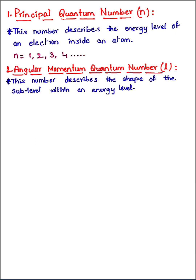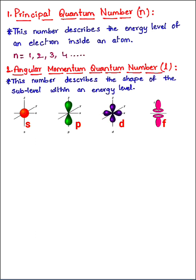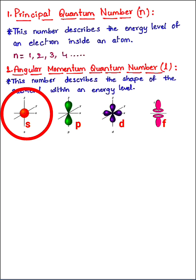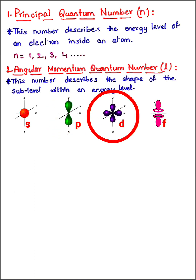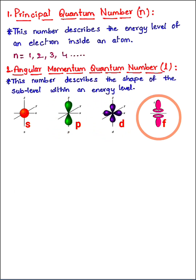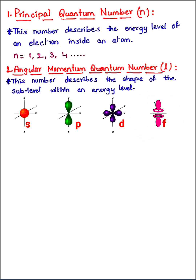We have four different sub-levels that you will see on a regular basis. The first is the s sub-level, which is spherical in shape. Then we have the p, d, and f sub-levels. For the s sub-level l is always 0, for p l is always 1, for d l is always 2, and for f l is always 3.